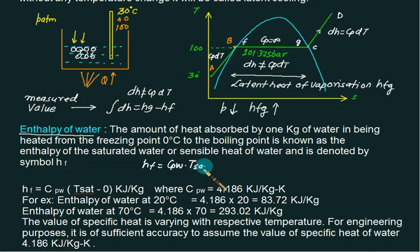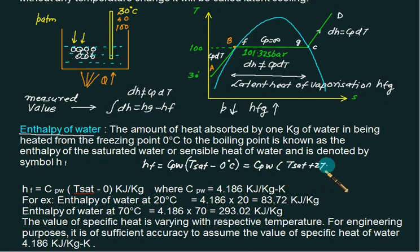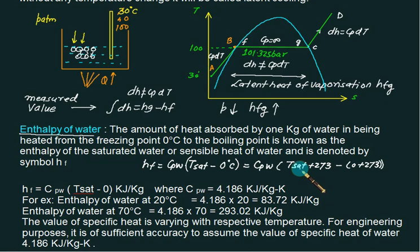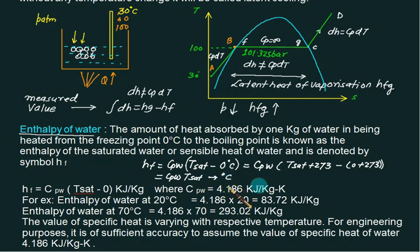Since the reference is 0°C, hf can be written simply as cpw × T_sat. The temperature T_sat must be taken in degree Celsius. If you use Kelvin, you write T_sat in Kelvin minus (0 + 273), and the 273 values cancel. So remember: when calculating hf, always use temperature in degree Celsius — hf = cpw × T_sat (°C).